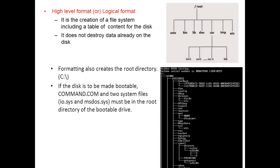High-level formatting, also called logical formatting, is used to create a file system including the table of contents for the disk. It will not destroy the data already on the disk. For example, the entire file system of Unix has been created when we go for high-level formatting - we have a root, and under root we have many file structures like Unix, bin, lib, dev, user, temp, and etc. In the user level, we have sub-levels with user1, user2 until usern along with the bin directory. This is how the hierarchical structure of files can be created using high-level format.